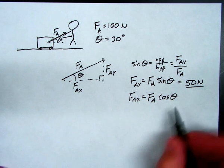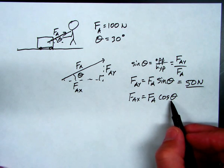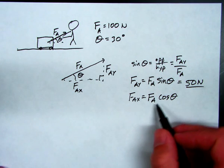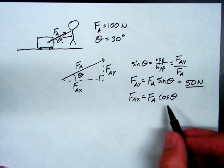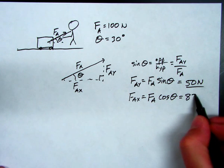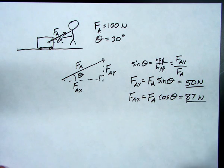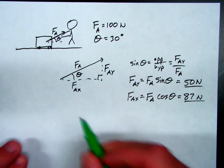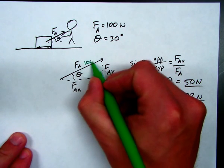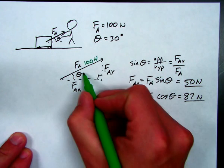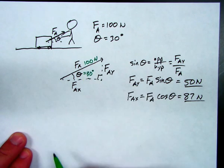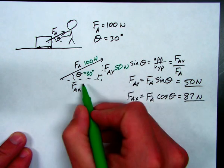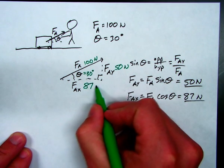The cosine of 30 is 0.866. I'm going to call it 0.87. So, 100 times cosine of 30 gives me about 87 newtons. What does that tell me? That tells me that if I pull with a force of 100 newtons at an angle of 30 degrees, that will be a vertical force of 50 newtons and a horizontal force of 87 newtons.